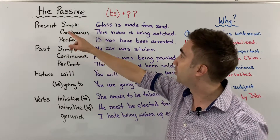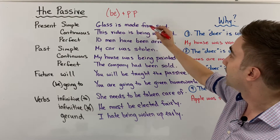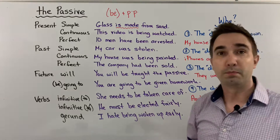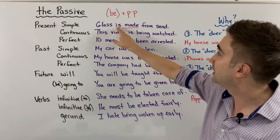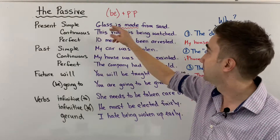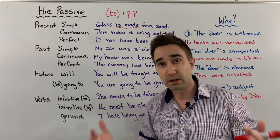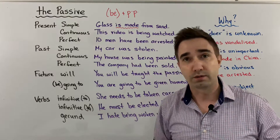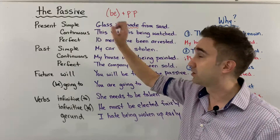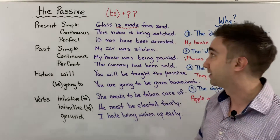If we look at the present simple, I can say: glass is made from sand. So here we have be plus the past participle for 'make' — glass is made from sand. With the passive, who makes the glass is not important, or I don't know, or it's not necessary. We want to focus on the object, not the subject. That is a passive sentence.